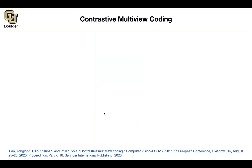We can move on to contrastive multi-view coding. You are going to be hearing the contrastive word for a while, because I want to look at it from different perspectives and understand it deeper and deeper. We all know that we perceive objects through different views — not only we see them, but also we hear them and we feel them, and sometimes we touch them. It's the same object, but you're approaching it from different perspectives.